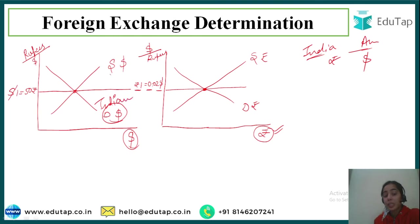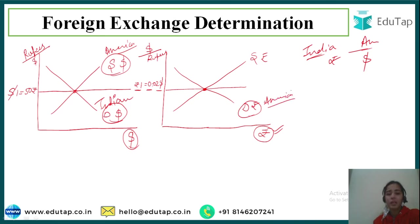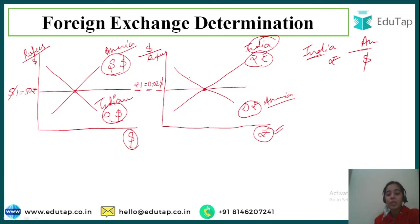Americans are supplying the dollars because it is their currency. Americans will be demanding the rupees, and Indians will be supplying the rupees because it is our currency. So we have understood the demand and supply: dollars on the x-axis means demand and supply of dollars; rupees on the x-axis means demand and supply of rupees.